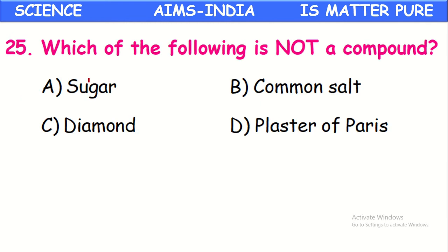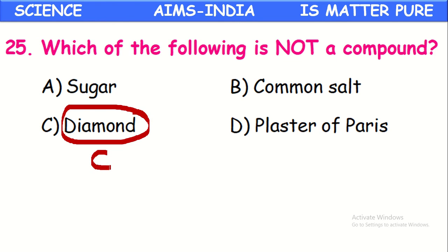Which of the following is not a compound? Among sugar, common salt, diamond, and plaster of Paris — diamond is not a compound. Diamond is made up of only carbon atoms, so it is an element, not a compound. It contains only one kind of atom — carbon — so it is an element.